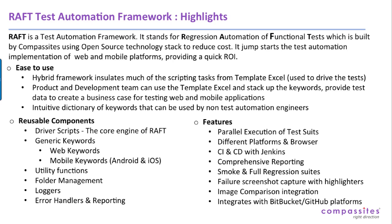We have generic keywords designed for web and mobile platforms, utility functions like reading from and writing to Excel, taking screenshots, and various other utilities. RAFT also has folder management — whenever a test executes, all results and screenshots are put into one particular folder, which can be used later when sending emails to relevant stakeholders. We also have loggers, error handlers, and reporting which are reusable for any project.